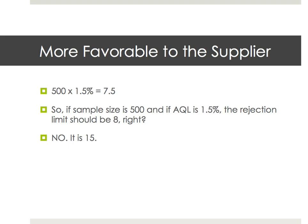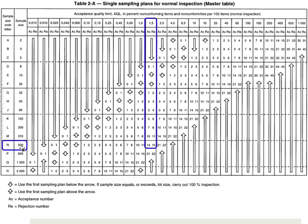Let's see it another way that also shows the standard is more favorable to the supplier. Let's say your sample size is 500 and you set an AQL limit at 1.5%. If you multiply those two numbers you get 7.5, so you'd think that finding 8 defects is already a rejection limit. But when you look at the standard, the number it gives you is 15. Here's the proof: 500 samples, 1.5% AQL — the rejection number is 15. So it's very favorable to the supplier; it seldom rejects a batch.